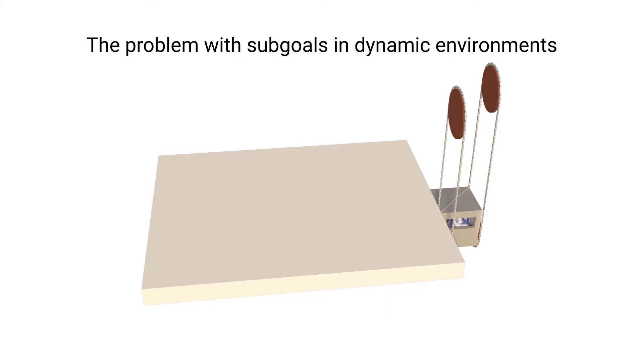When training continues, however, the low-level policy usually gets faster at achieving the subgoal and, as a consequence, misses the elevator.